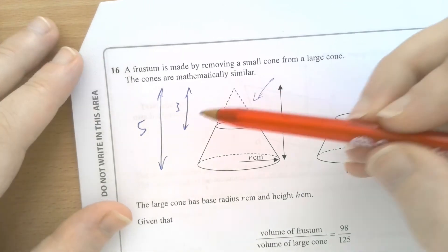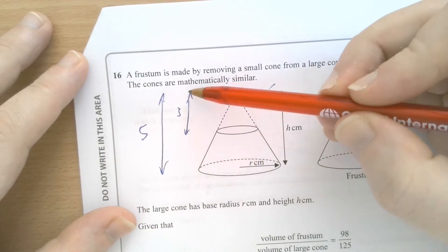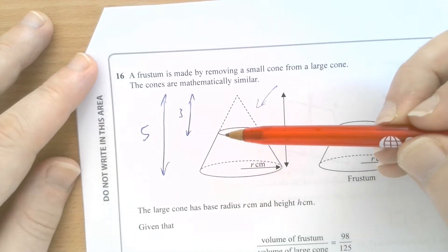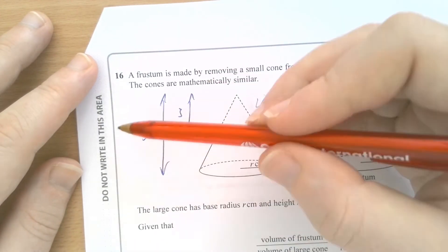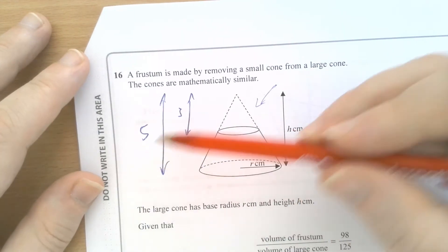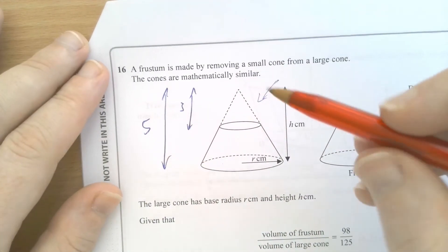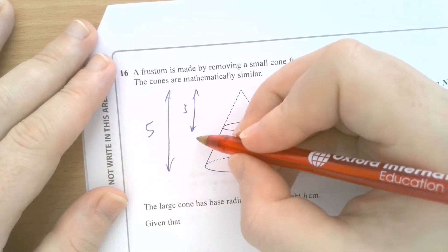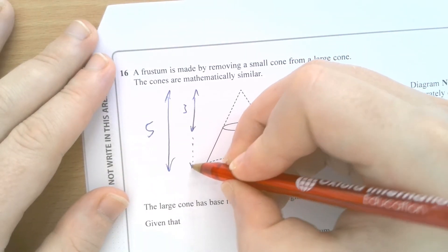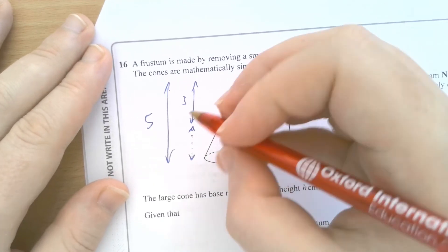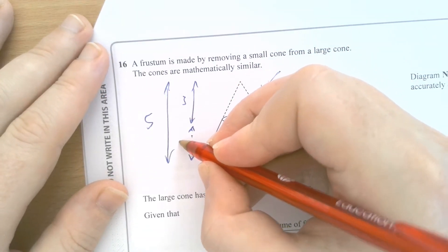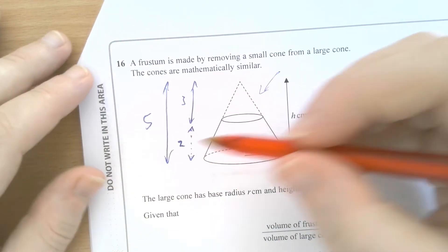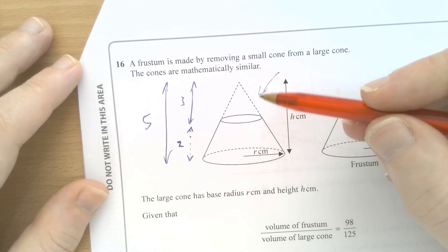So in other words, for every 3 cm tall the smaller cone is, the larger cone is 5 cm tall. That's the ratio, that's the link, the proportionality between those heights. If that's true, then obviously the missing link here is the height of the frustum. And that would be, proportionally speaking, 2 within this kind of proportionality that we've established here.